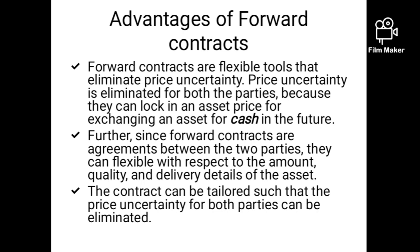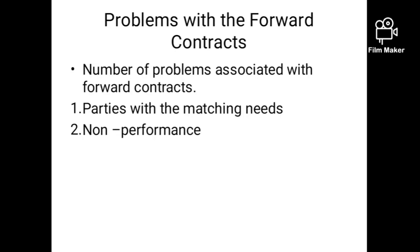But if there are advantages, there are also limitations of forward contract. The first limitation is finding parties with matching needs. It is very difficult to find a counterparty — if I want to buy something, I need a person ready to sell the same quality and quantity I want. For example, I want to buy 100 kg of Shrikhand on the 27th. There may be many people ready to sell Shrikhand, but they may not be able to deliver on the 27th, or the quality may not match — I want mango Shrikhand but they can only supply Kesar Shrikhand.